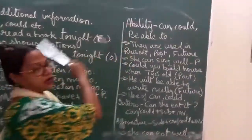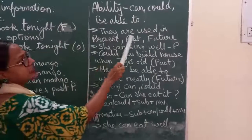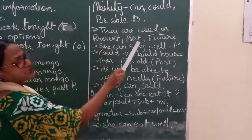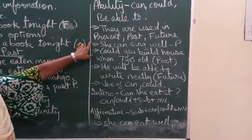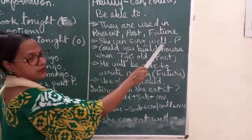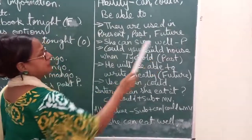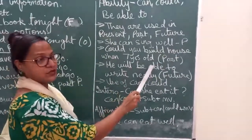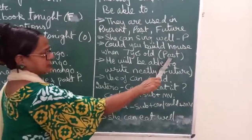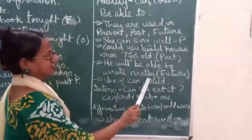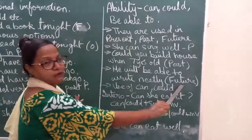Next is ability. Modals are used for ability, and for ability we use can, could, and be able to — used in present, past, and future. For example, 'She can sing well' — can is showing the present form. 'Could you build a house when seven years old?' — here he is talking about the past. 'He will be able to write neatly' — will is the helping verb showing future form.